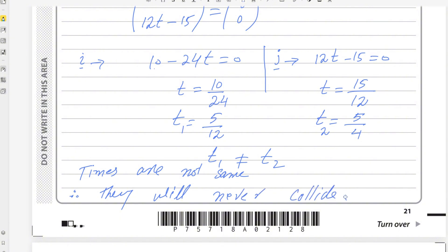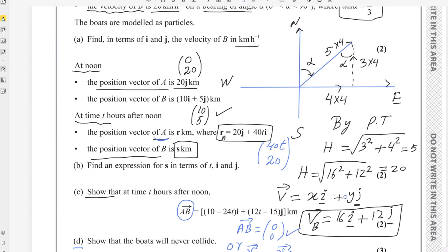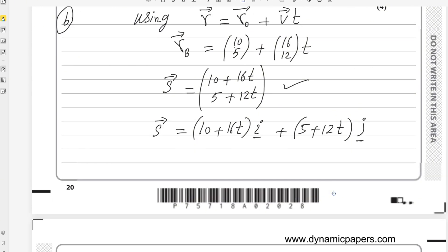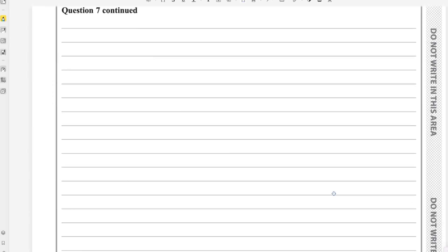So that part is done. Let's move on to the last part of this question: find the distance between the boats when the bearing of B from A is 225 degrees. We already have vector AB, and we can find the bearing by drawing that vector AB.